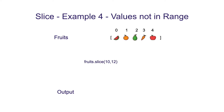In example 4, we are going to use slice with values that are not in range. We have the same array with 5 fruits and we are using slice with parameters 10 and 12. Since 10 and 12 are both outside the range of this array, the output will be an empty array.